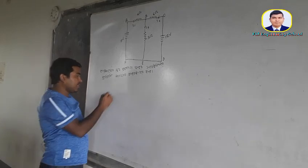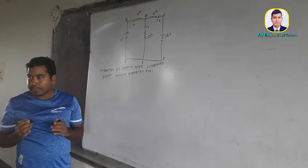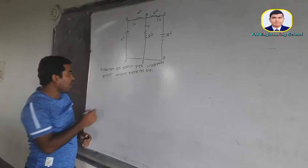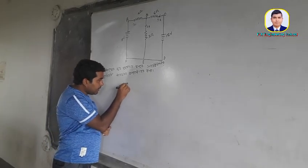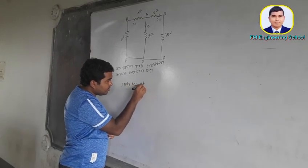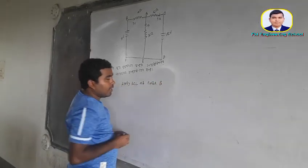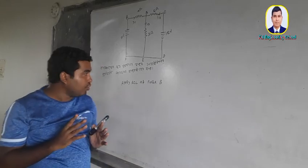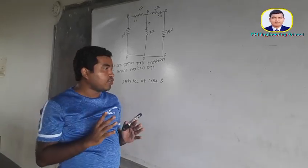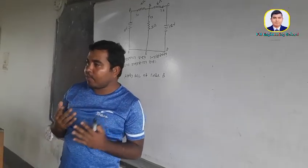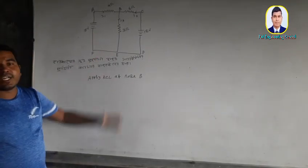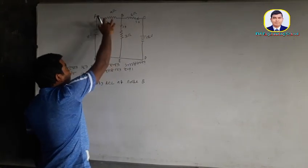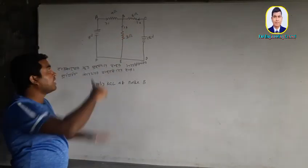Let's break it down. We'll look at the current mesh. We need to apply the current. You can apply the current cluster into the current loop. What is the current plot? We have a basic current. You can see this — I1, I2, I3. This is a current plot.